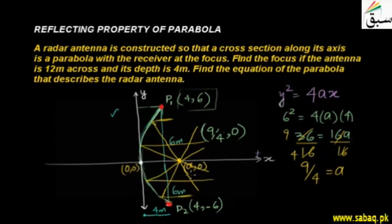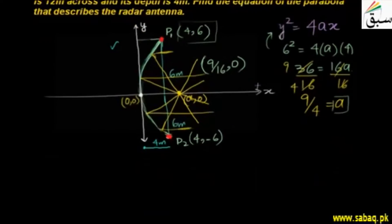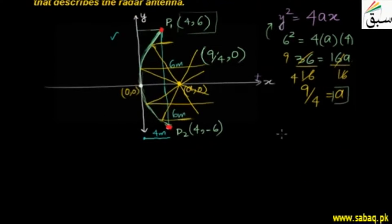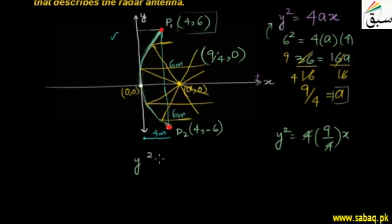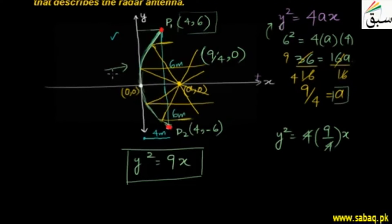So, if I have the general equation y² = 4ax and substitute a = 9/4, the equation of the parabola describing the radar antenna is y² = 4 × (9/4) × x, which simplifies to y² = 9x.